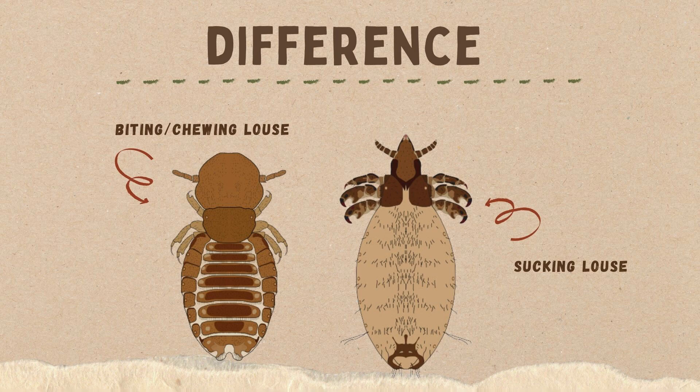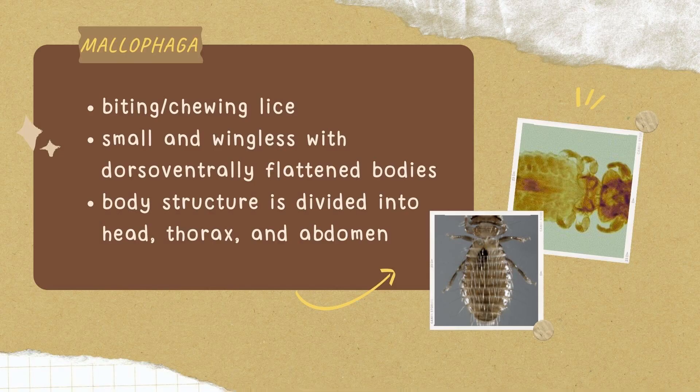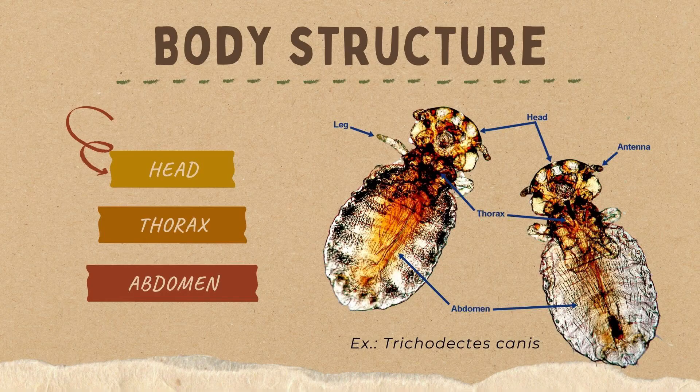Now, for Order Malophaga, they are known as biting or chewing lice. They are small, wingless, and they have dorsoventrally flattened bodies. Their body structure is composed of head, thorax, and abdomen.